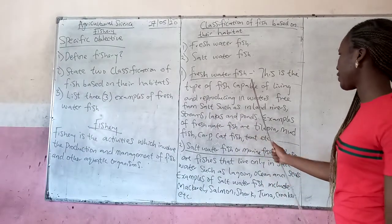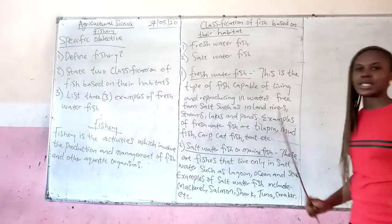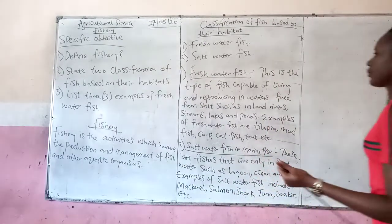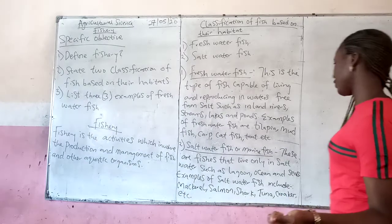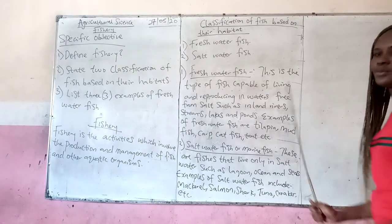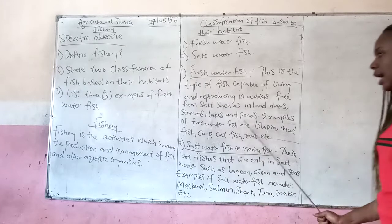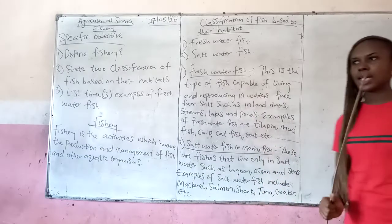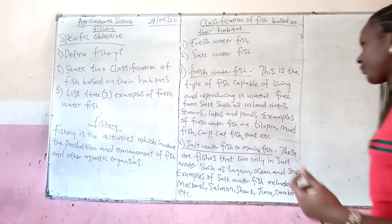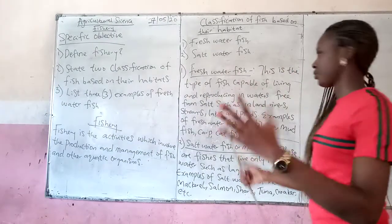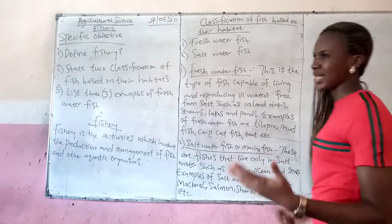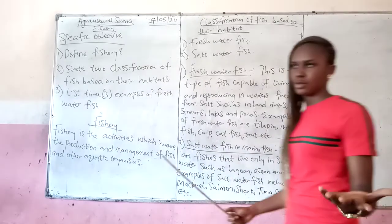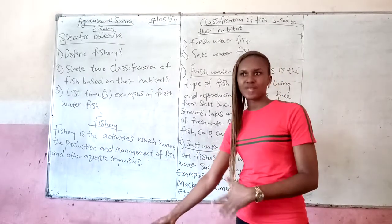Freshwater fish is a type of fish that lives in water that is free from salt. We have different examples of freshwater fish. We have the tilapia, the mudfish, the catfish, and the rest of them. These fishes are seen in freshwater. Freshwater does not consist of the ocean. Rather, freshwater fish refers to those we can easily come across in rivers, streams, lakes, and ponds. Some of us even have these near our houses.